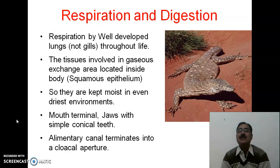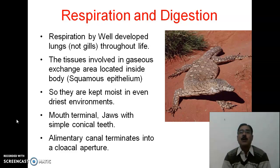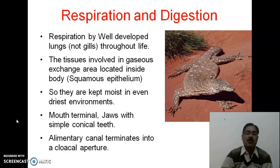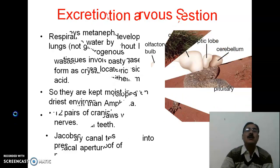The mouth is terminal, with jaws bearing simple conical teeth. They have polyphyodont type of dentition, meaning teeth are replaced multiple times throughout life whenever they are lost. The alimentary canal terminates into a cloacal aperture.